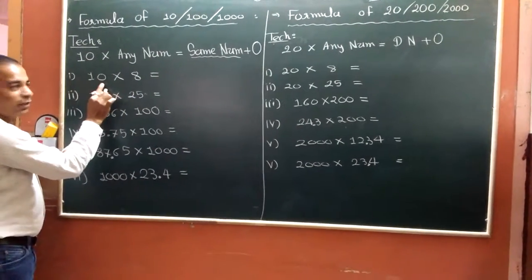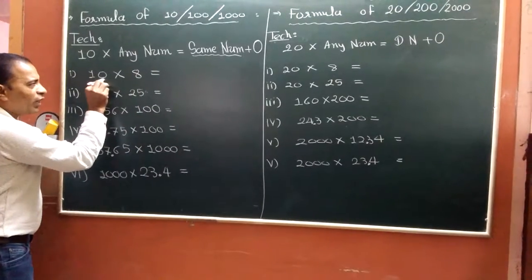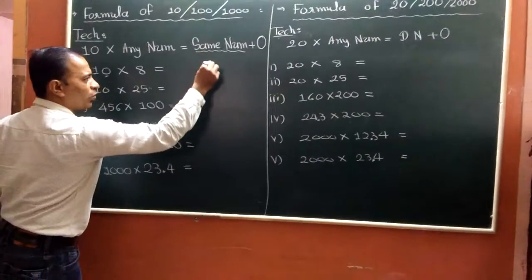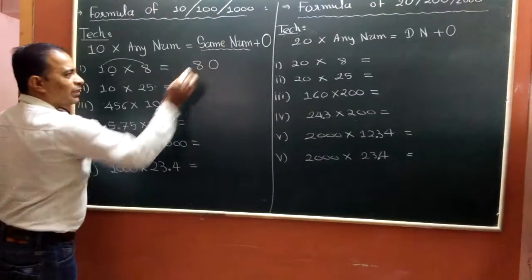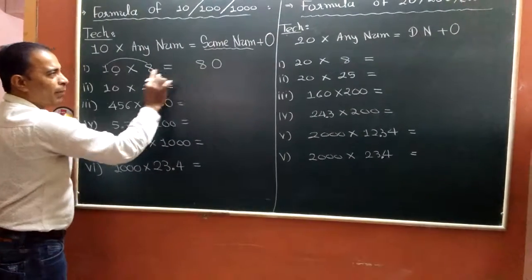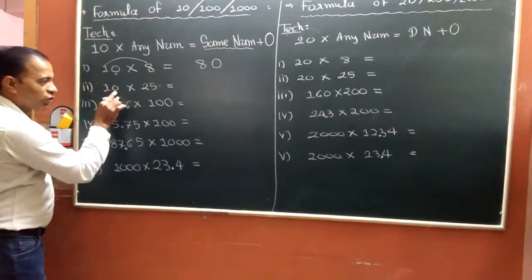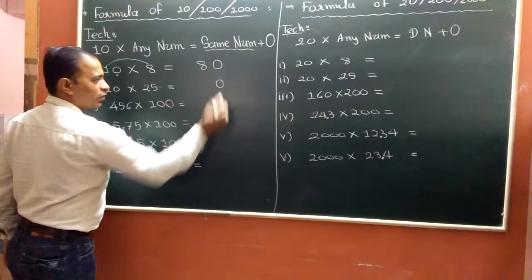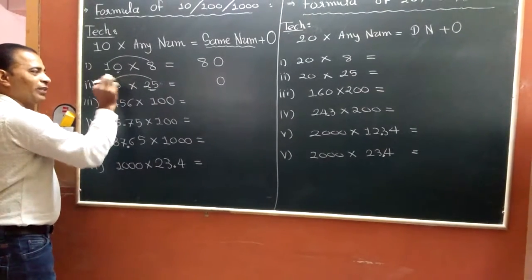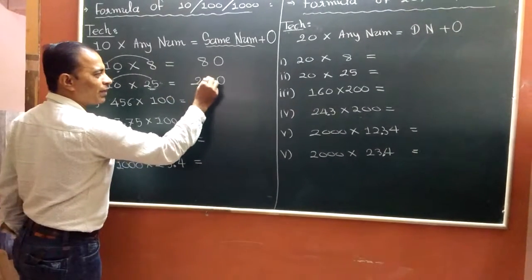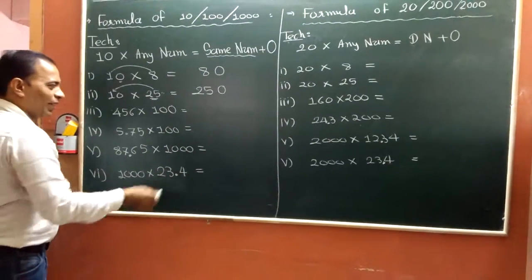For example, 10 into 8, so simple, only 10, 8, same number. Again I explain you, 10 into 25, 25, same number, so simple.